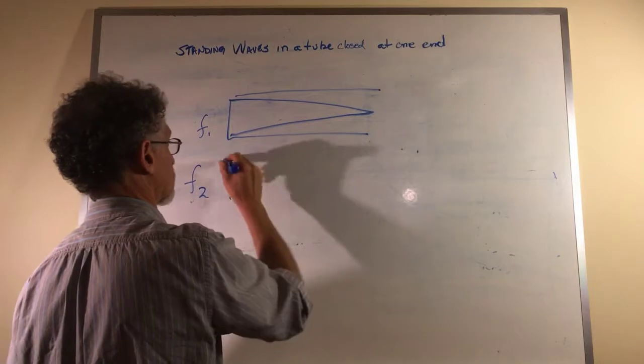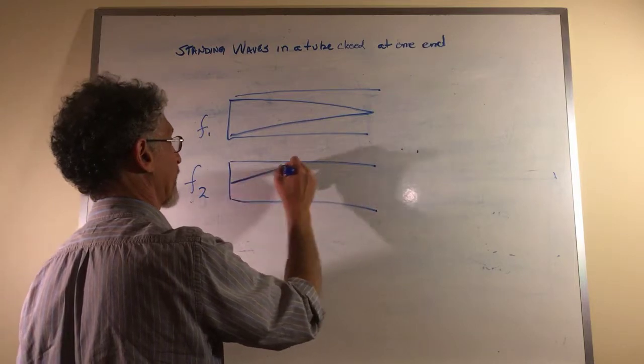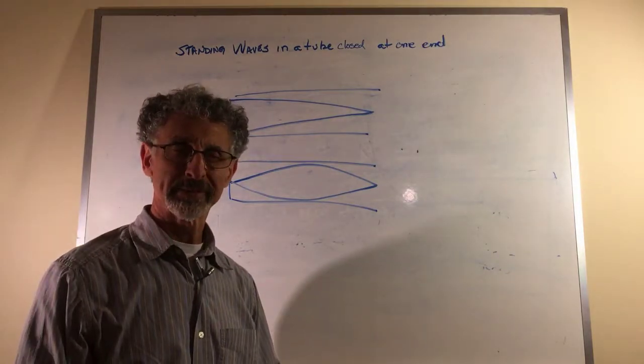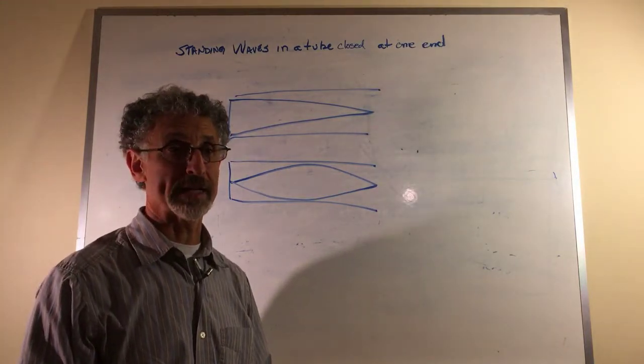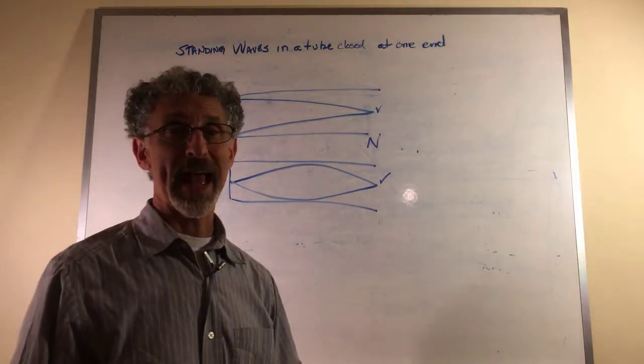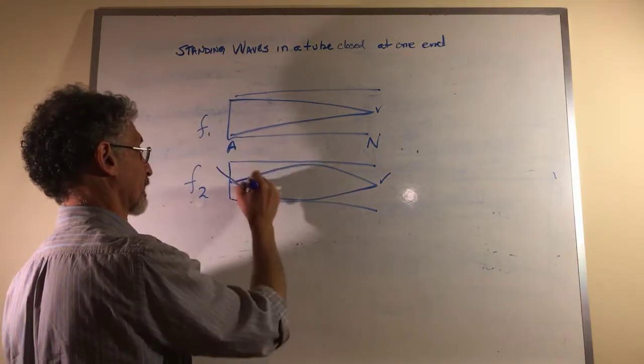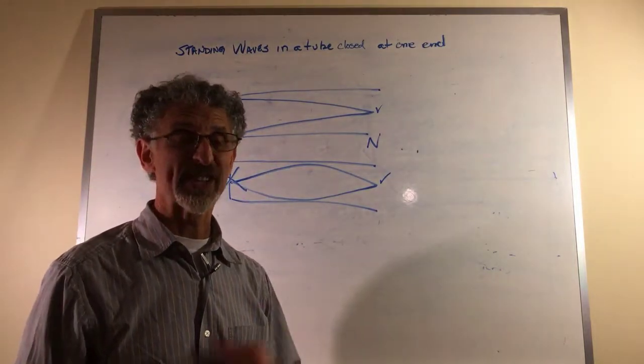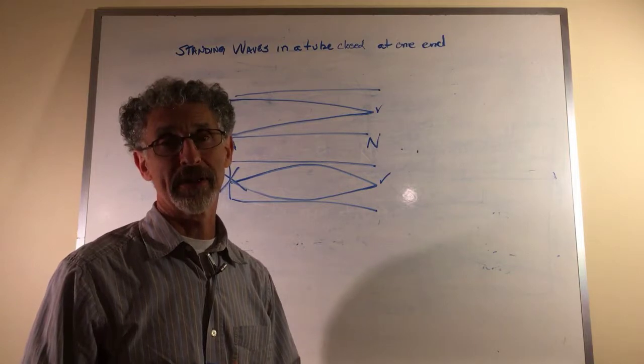Here we have a quarter of a wave. Let's go to where we have a half a wave. So far so good? Not quite. What did we say we always have to have at an open end? A node. What do we have at a closed end always? An anti-node. This is not an anti-node. So as it turns out, a tube that's open at one end cannot have the second harmonic.